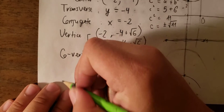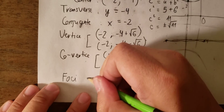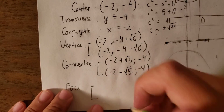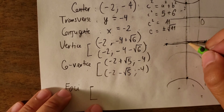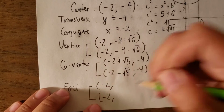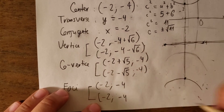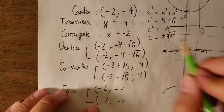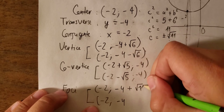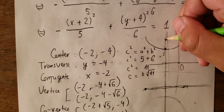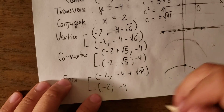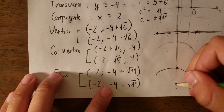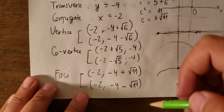The next part is the foci. Since the hyperbola follows the y-axis, we keep the x-coordinate as minus 2. We calculate c² equals a² plus b², which is 6 plus 5 equals 11, so c equals plus or minus square root of 11. The foci are at (minus 2, minus 4 plus square root of 11) and (minus 2, minus 4 minus square root of 11).